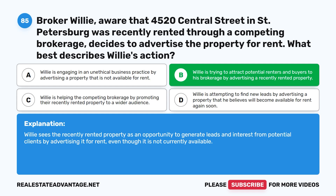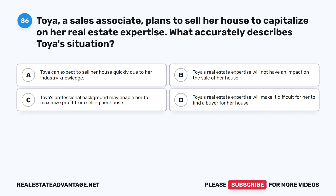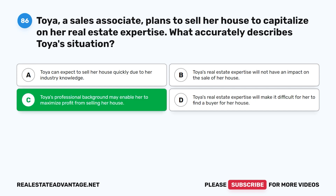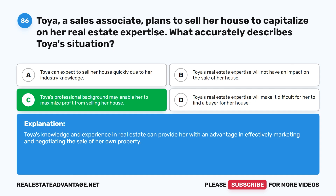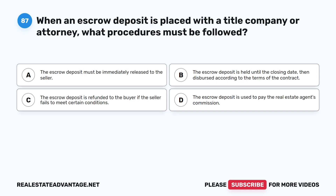Question 86: Toya, a sales associate, plans to sell her house to capitalize on her real estate expertise. What accurately describes Toya's situation? A. Toya can expect to sell her house quickly due to her industry knowledge. B. Toya's real estate expertise will not have an impact on the sale. C. Toya's professional background may enable her to maximize profit from selling her house. D. Toya's real estate expertise will make it difficult for her to find a buyer. The correct answer is C. Toya's knowledge and experience in real estate can provide her with an advantage in effectively marketing and negotiating the sale of her own property.